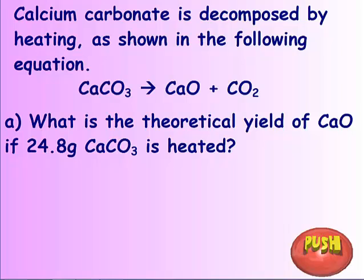In this problem it's first asking you what's the theoretical yield of calcium oxide if we started with 24.8 grams of calcium carbonate. So doing exactly what you've been doing, convert 24.8 grams calcium carbonate to calcium oxide. Restart the video when you're done.